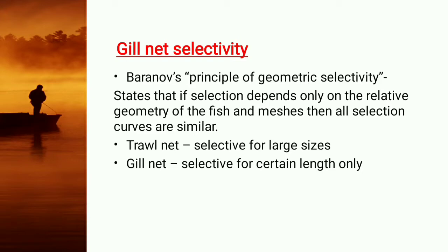For this there is an equation. Selectivity was first given by Barnov. In 1972, Barnov first gave the principle of geometric selectivity, which states that if selection depends only on the relative geometry of the fish and meshes, then all selection curves are similar. There are two curves mainly given: the bell-shaped curve and the sigmoid curve.